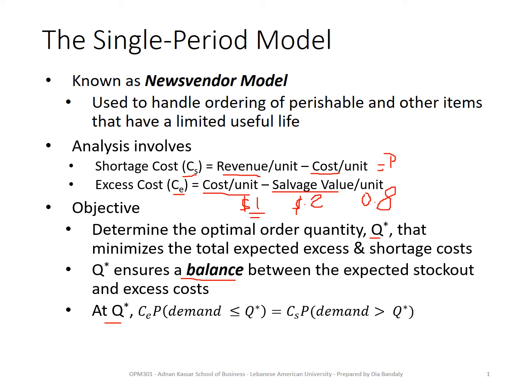At the optimal quantity, we are balancing between two costs. This cost is equal to the unit excess cost CE times the probability that demand is less than or equal to Q star. When demand is less, that means we have an excess — that's why we multiply by CE. The other cost is CS times the probability that demand is greater than Q star.